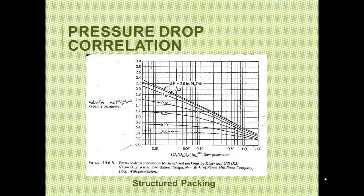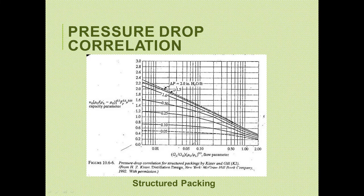The HETP (Height Equivalent to a Theoretical Plate) concept can also determine Z: Z = HETP × N, where N is the theoretical number of stages from Kremser's equation. HETP represents how tall a section of packing must be to equal one theoretical stage. This formula applies to both packed and tray towers when operating and equilibrium lines are parallel.